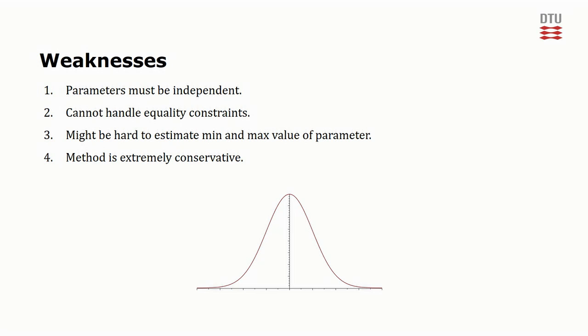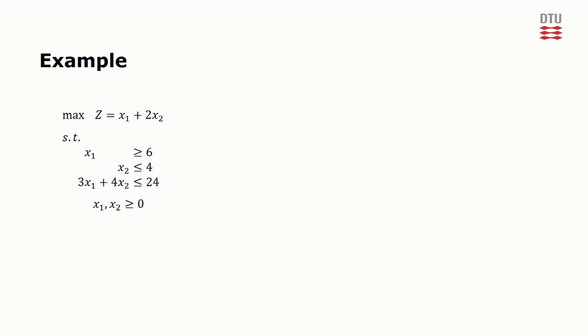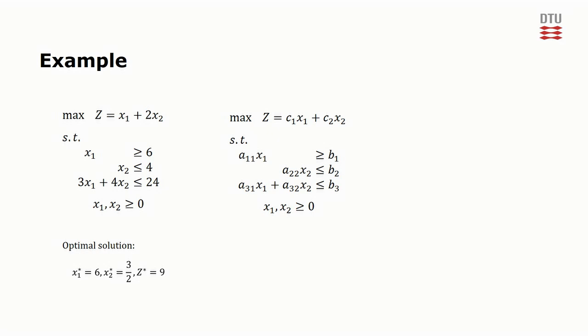We conclude this video by looking at an example. On the left, we have a simple linear program which has this optimal solution. Let's now say that we are in fact unsure about the parameters in the program. In the middle here, you see an algebraic representation of the program. And here on the right, the ranges of the parameters are given.